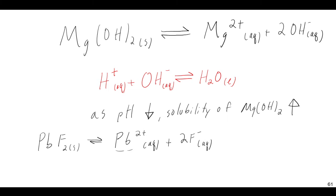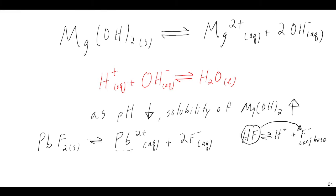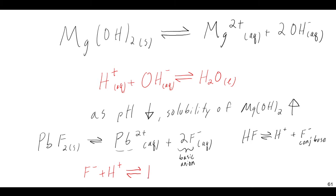This F⁻ is a basic anion — not just because it's relatively simple, but it's basic because it is the conjugate base of a weak acid. If you have a weak acid like HF, it donates H⁺ and F⁻. If this is a weak acid, then its conjugate base does act like a base. So F⁻ is a basic anion. Just like we had OH⁻ that we could neutralize, now imagine you have this F⁻ and you're adding H⁺ to it. There is going to be a natural equilibrium to make the weak acid form — the reverse of the HF equilibrium.